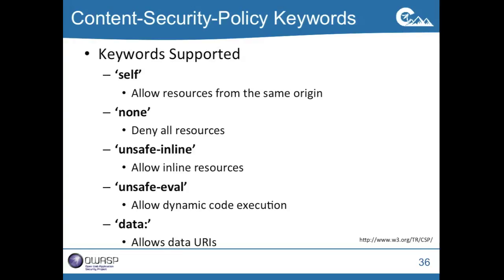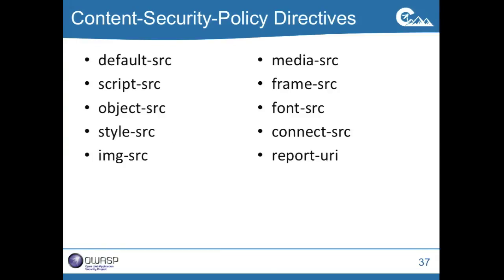Data is another keyword. If you use data URIs, there are attacks where you craft an XSS payload, base-64 encode it, put it in a data URI, and the browser will decode that and launch the attack — a nice way to bypass request validation. The different directive areas: default-src, script-src, object-src, style-src, media-src, frames-src. These are talked about in more detail in the SANS webcast on Content Security Policy.